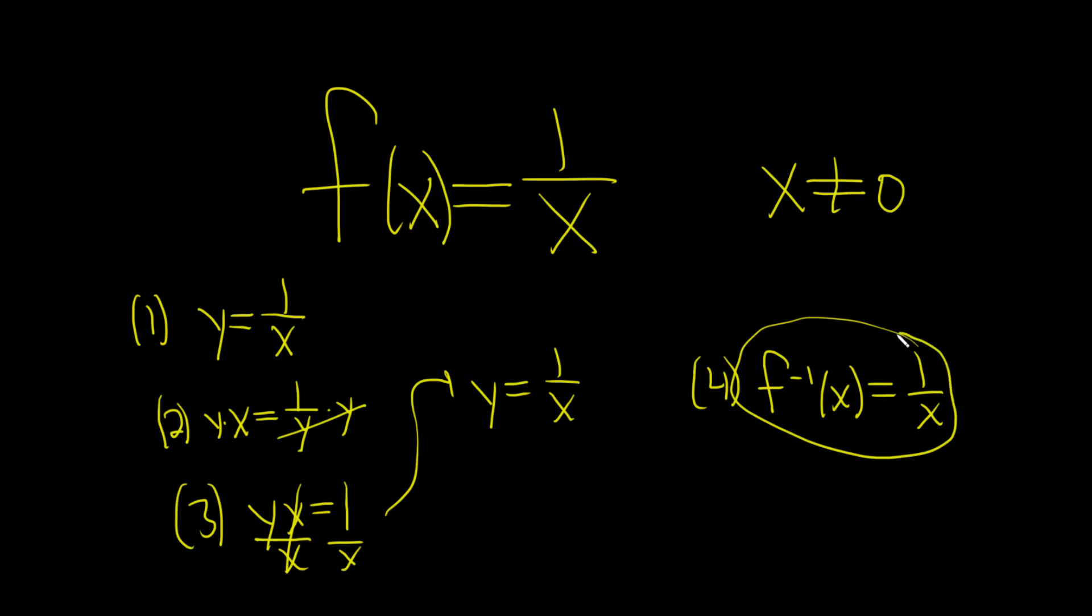So we got the same answer as the original problem. This happens sometimes. Functions can have their own inverses, and 1 over x is an example of that. It's called an item potent function. I hope this video has been helpful.